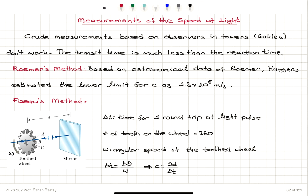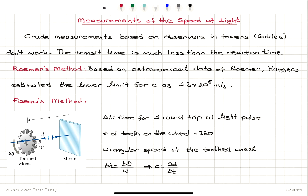Römer's method is based on astronomical data. Huygens estimated the lower limit for the speed of light as 2.3 × 10⁸ meters per second. These astronomical observations led to an early estimation for the speed of light.